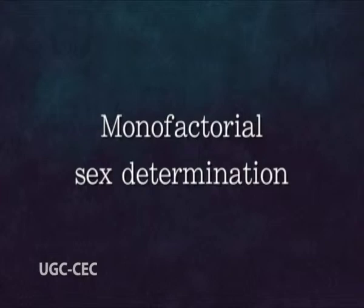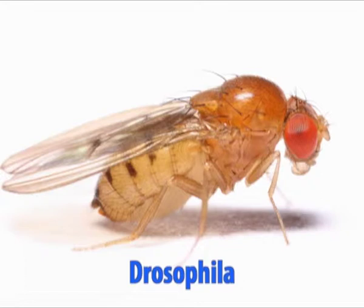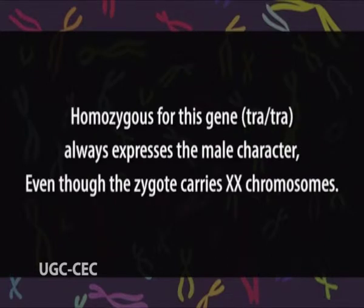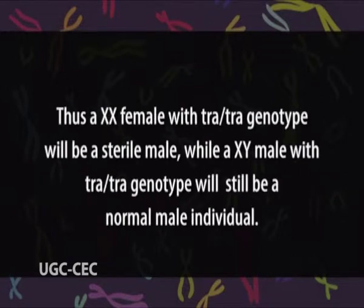Monofactorial sex determination: in certain animals, sex determination is influenced by the differential action of a single gene. In Drosophila, an autosomal recessive gene known as the transformer gene (TRA) influences sex determination. Homozygous TRA/TRA individuals always express the male character, even though the zygote carries XX chromosomes. Thus, an XX female with TRA/TRA genotype will be a sterile male, while an XY male with TRA/TRA genotype will still be a normal male individual.